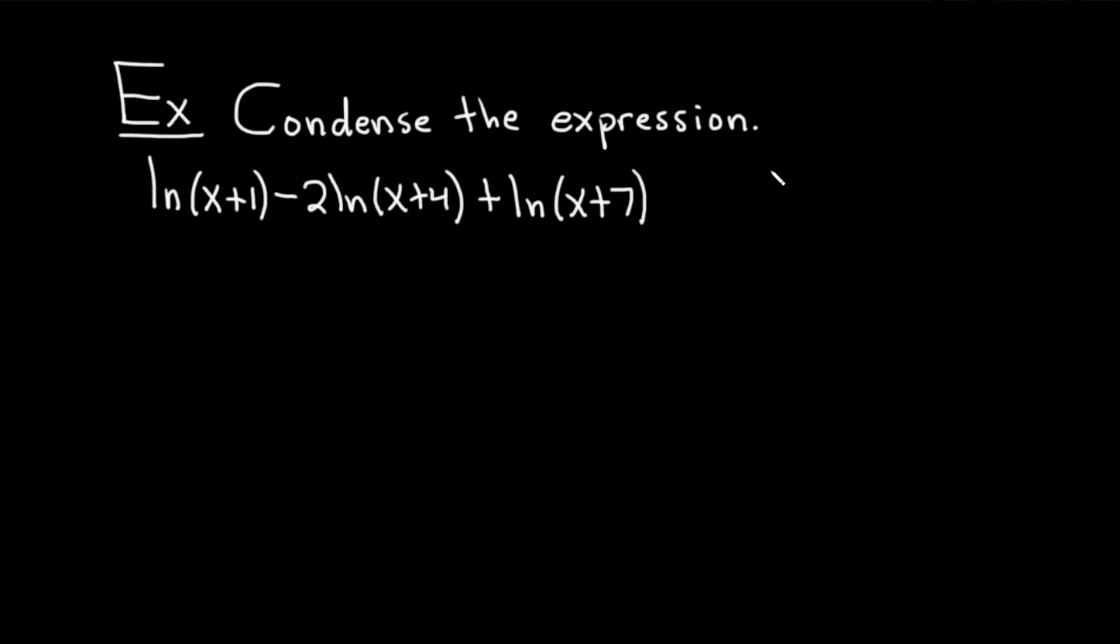I'm briefly going to write the rules here on the side, just using ln. These rules work for any log with any base. So if we have the natural log of x times y, we know that's the natural log of x plus the natural log of y. That's the product rule. If we have the natural log of x over y, this is equal to the natural log of x minus the natural log of y. That's the quotient rule.